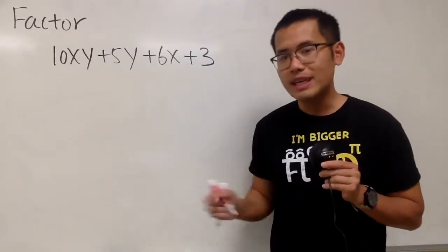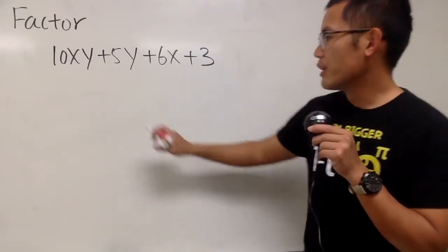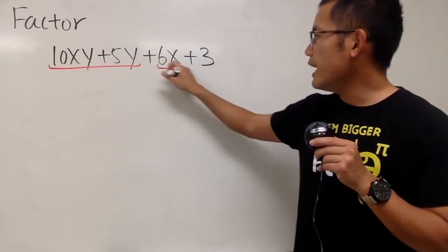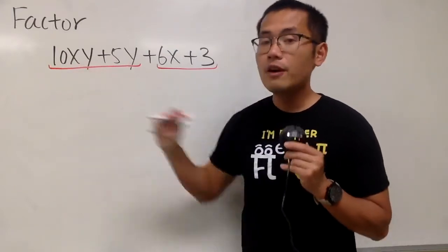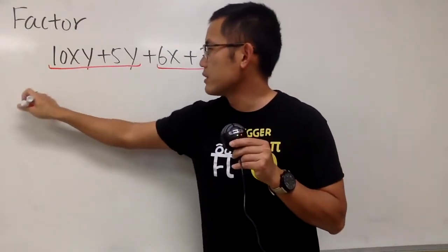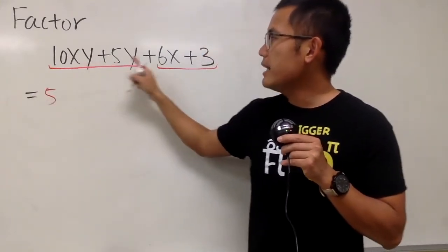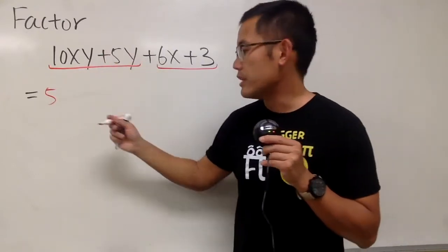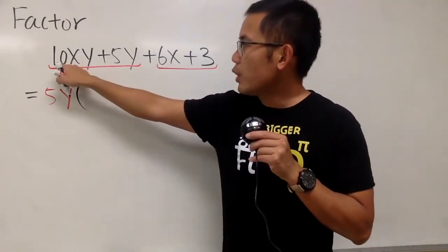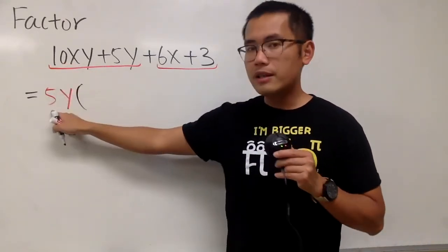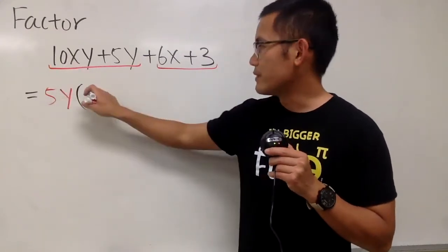Here we are going to factor this. Notice that this has four terms, so we should do it by grouping. Let's focus on the first two terms and the last two terms. We have 10 and 5 — the 5 is in common, so we can factor that out. Then we see x times y and y — the y is in common, so we can factor that out too. 10 divided by 5 gives us 2, so we have 2x.